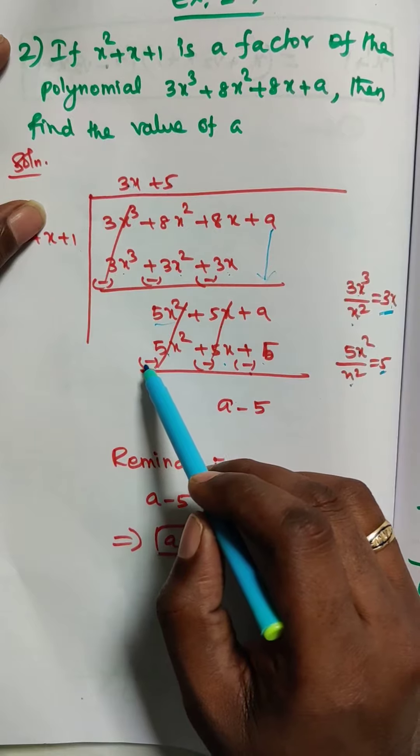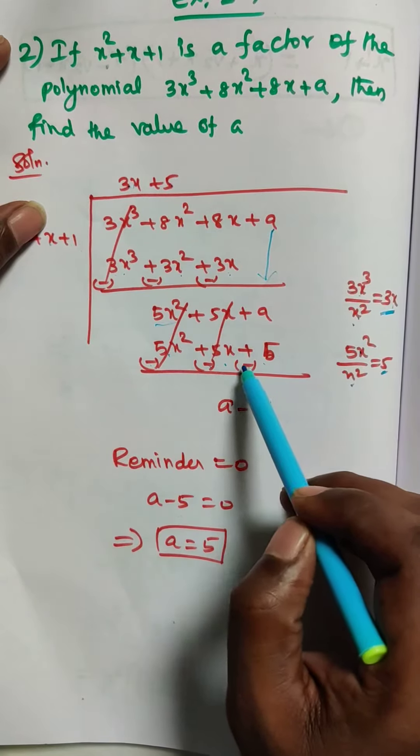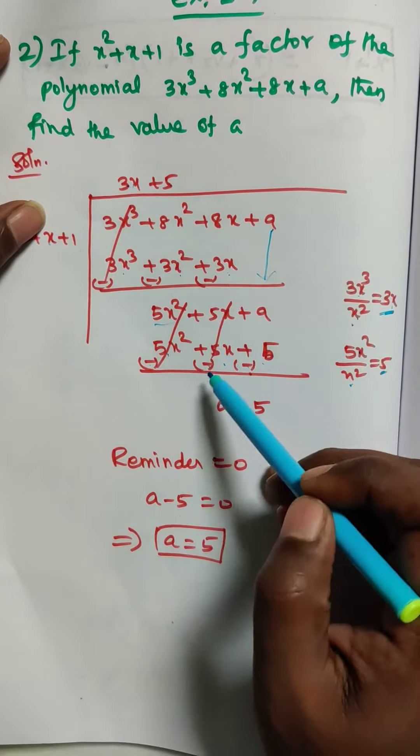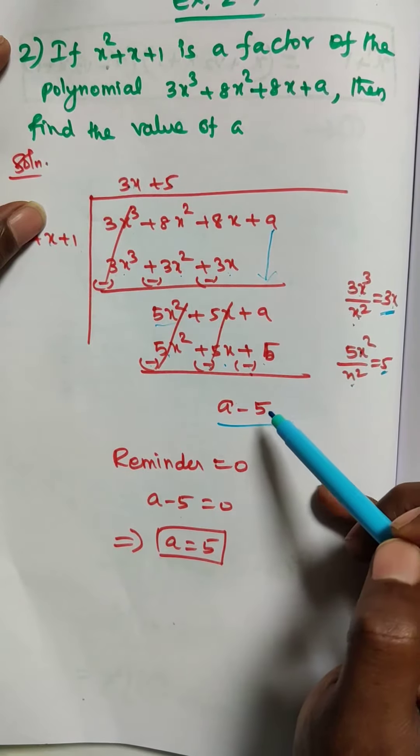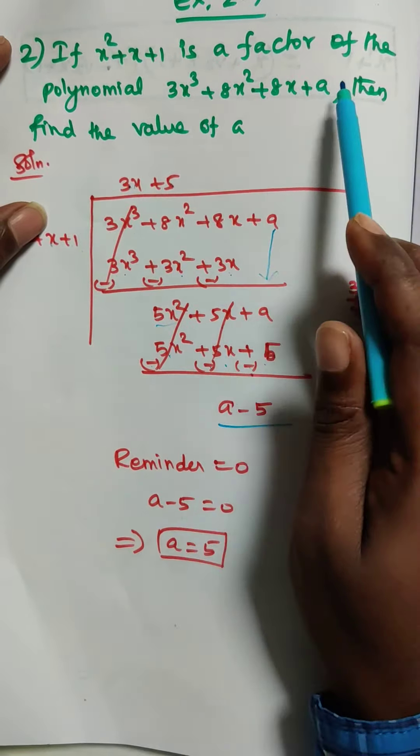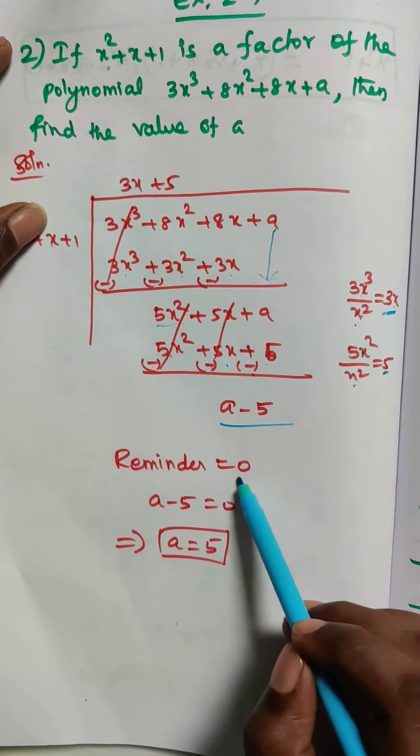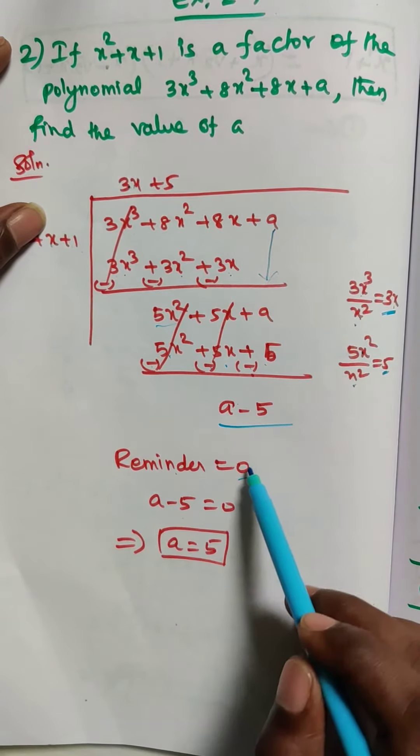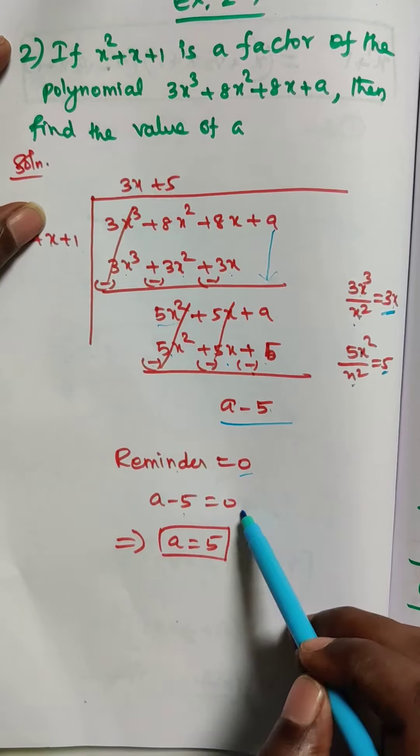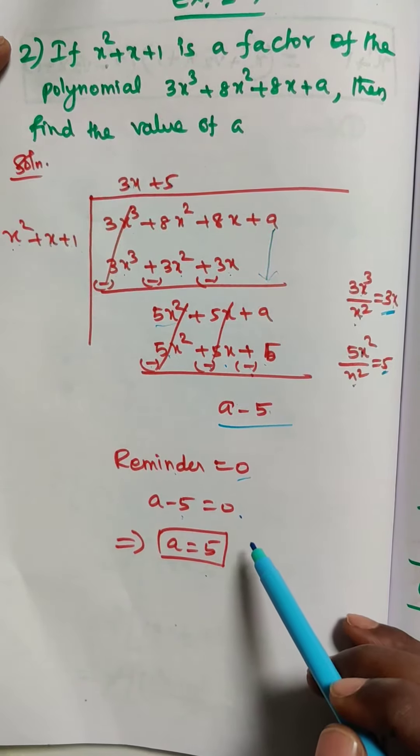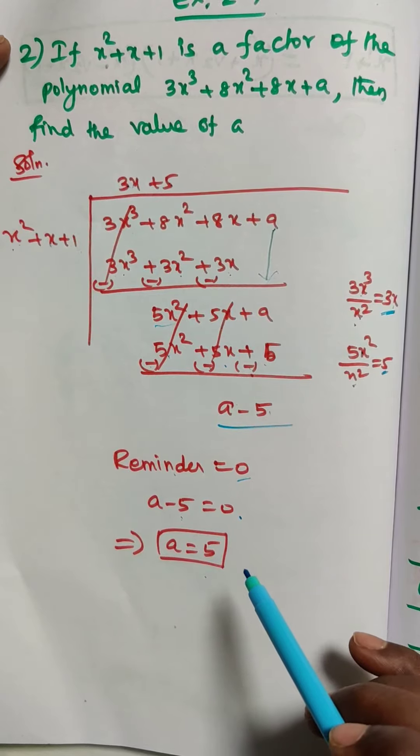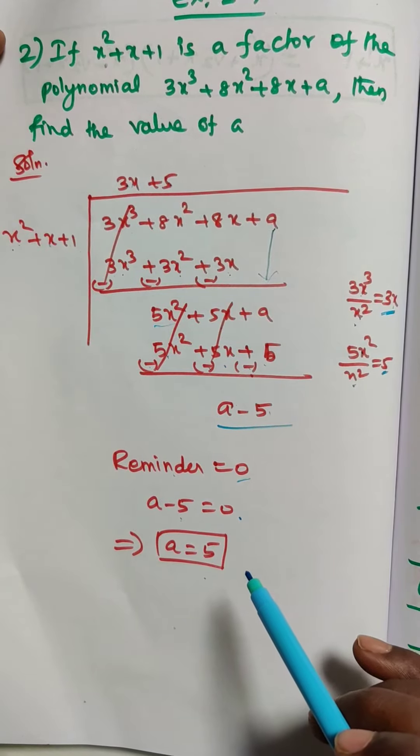We have to change the signs for the remainder. Then minus, minus, here also minus. So it will be cancelled. The remainder is a minus 5. For factors, the remainder equals 0. So a minus 5 equals 0, therefore a equals 5. This is the answer for this sum. Clear? Okay children, thank you.